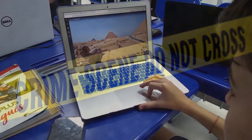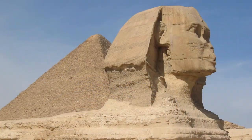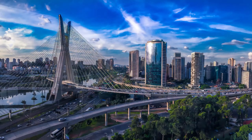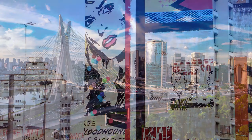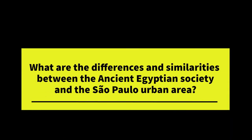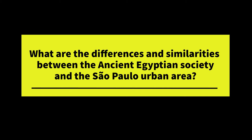In our Social Studies class, we were beginning our studies about the ancient civilizations, in particular the ancient Egyptian society. At the same time, in Geography class, we were focusing on urbanization, the challenges of urban areas and the causes that lead to the creation of such a large city like São Paulo. So the project started with the driving question: What are the differences and similarities between the ancient Egyptian society and the São Paulo urban area?